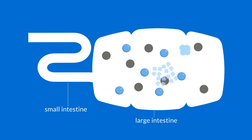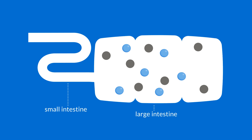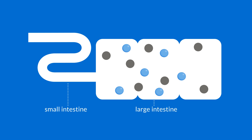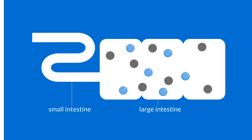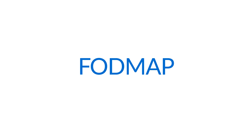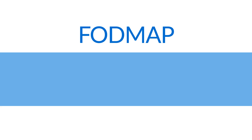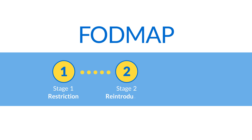Restricting FODMAP intake has been shown to improve symptoms in people who are sensitive and alleviate discomfort. The low FODMAP diet consists of three key stages: FODMAP restriction, FODMAP reintroduction, and finally FODMAP personalization.